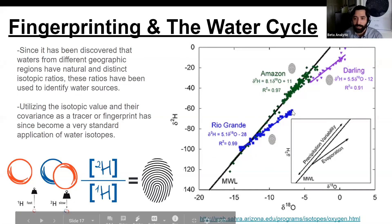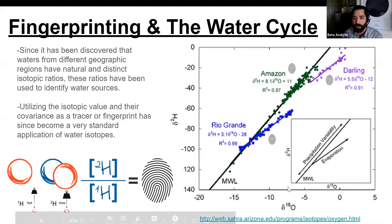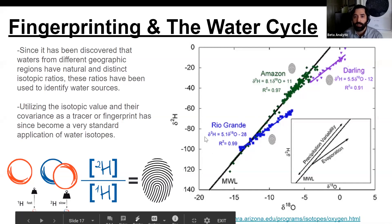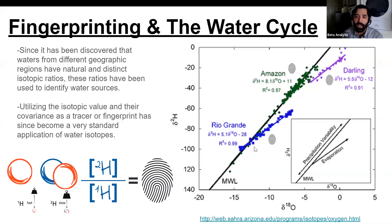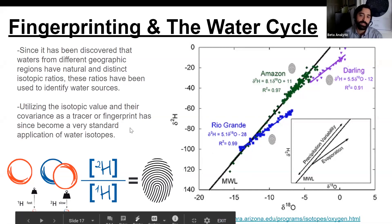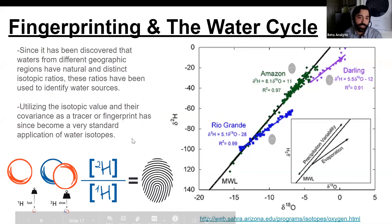An isotopic fingerprint is the range of these values on your X and Y Cartesian planes, and also the slope of the relationship of these different areas. This is what we mean when we say isotopic fingerprinting — we're referring to the delta values and the relationship they have, and what we're able to do is use these to isolate different regions of water.